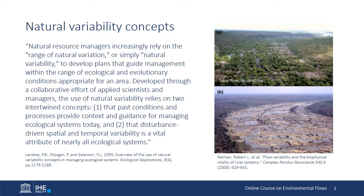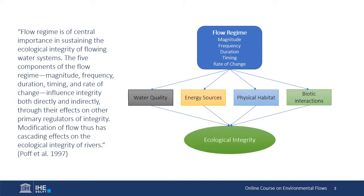Adoption of these approaches changed how disturbances like wildfires were managed — instead of being suppressed, they were accepted as serving an important ecological role. In river ecosystems, the natural variability of the flow regime was recognized as a key controlling variable in sustaining ecological integrity — you'll even hear it referred to as the master variable.